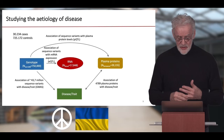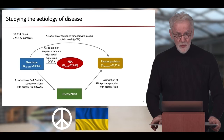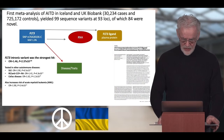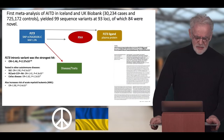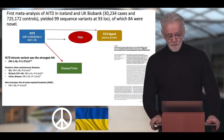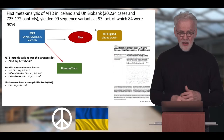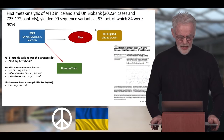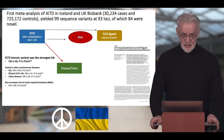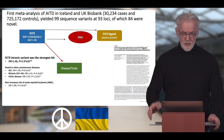The data we used: first and foremost, 30,000 cases and about 725,000 controls, and then very substantial data on diversity in the sequence. We had RNA-seq data on about 17,000 individuals, plasma proteins measured in blood in about 40,000 individuals, and we brought this all to the study of autoimmune thyroid disease. We started with a meta-analysis of the association of variants in the genome with the disease using cases from Iceland and the UK Biobank, yielding 99 sequence variants at 93 loci, of which 84 were novel. The variant with the biggest effect was an intronic variant in the FLT3 gene.